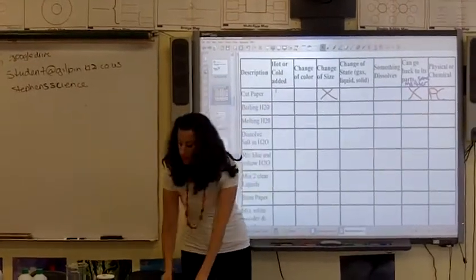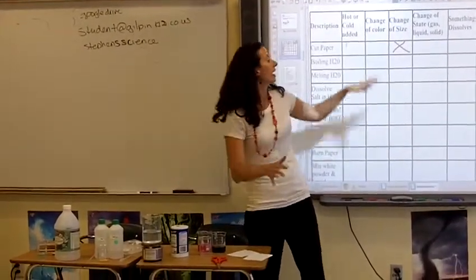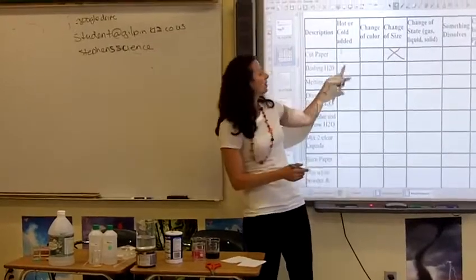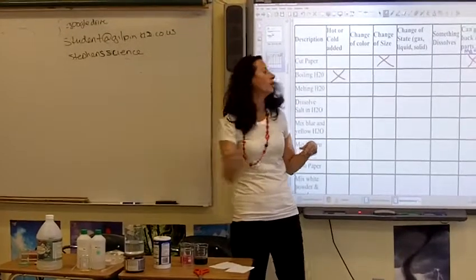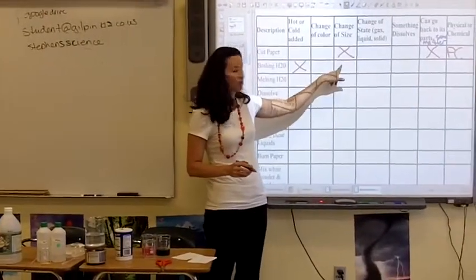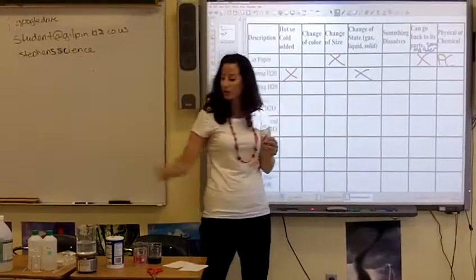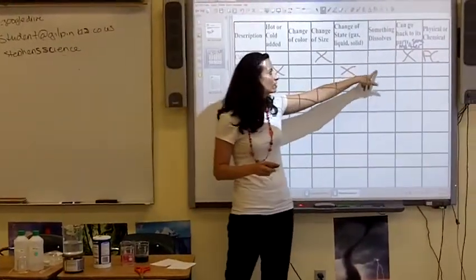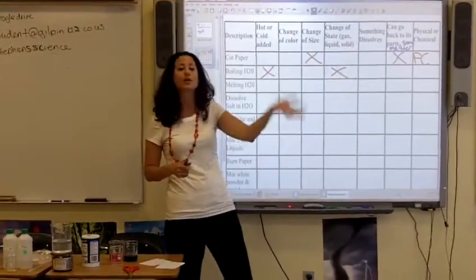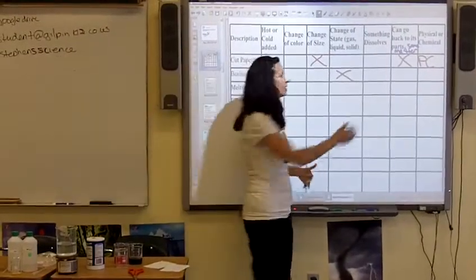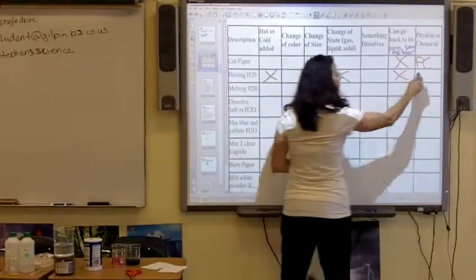If you check the box for 'same type of matter' or 'can go back to parts,' that is a physical change. The next demo is boiling H₂O. I have water sitting on a hot plate. Was heat added? Yes. Is there a change in color? No. Change in size? No, you still have the same amount. Change in state? Yes — water is going from a liquid to a gas. Did something dissolve? No. Can it go back? Yes — I can take that evaporated water and turn it back to a liquid, and it's still the same type of matter. That's a physical change.